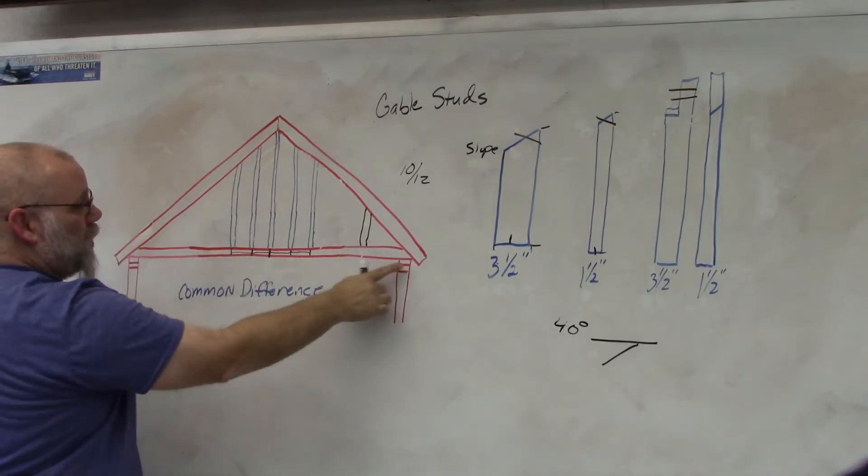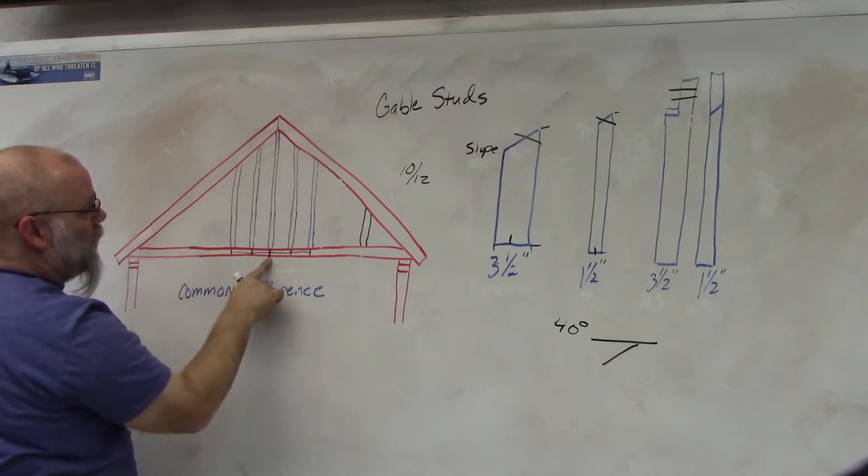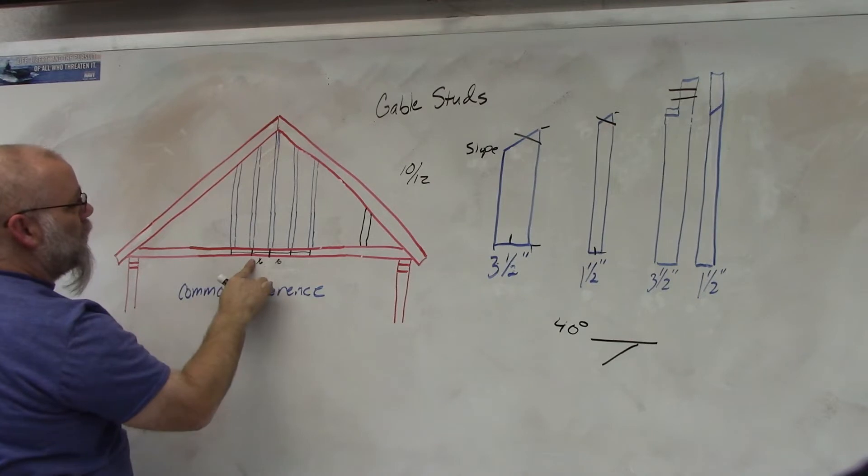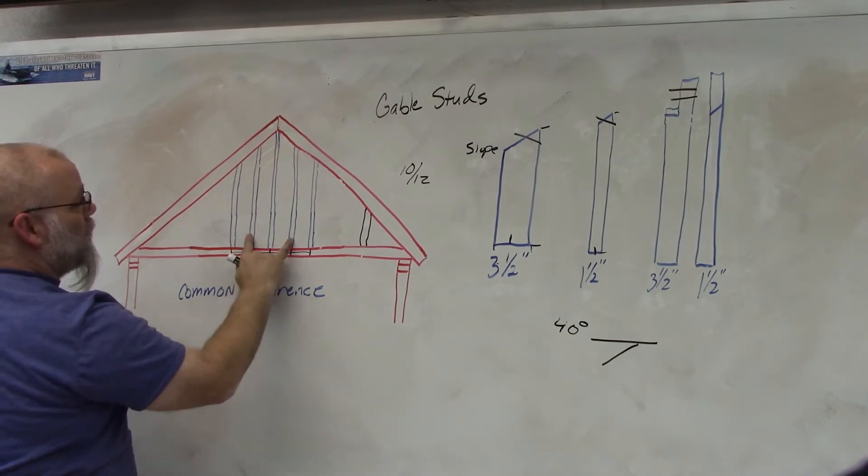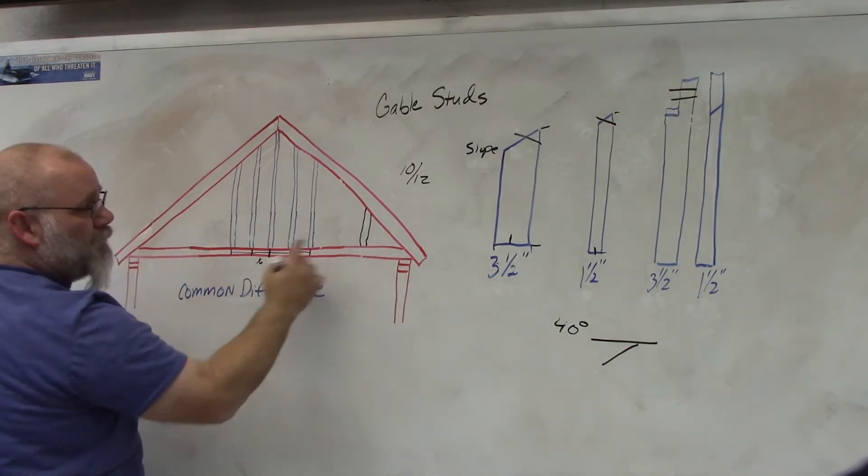of the structure where it should be right below the peak comes right down here and then I measure over 16 inches on each side. Now like I said these two rafters will be the same length and then I measure 16 more and then these two would be the same length and so on until you get down here and you run out of space.